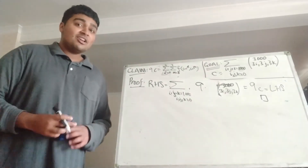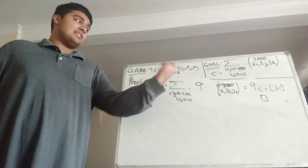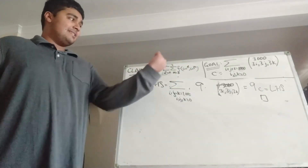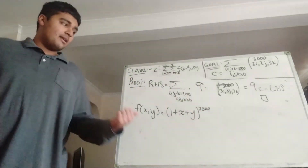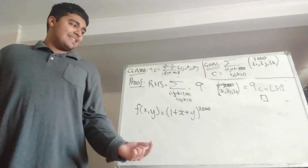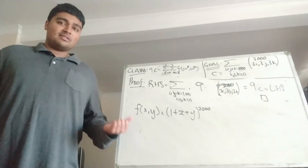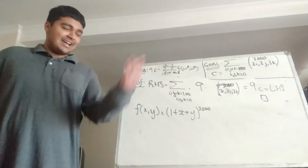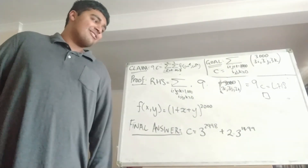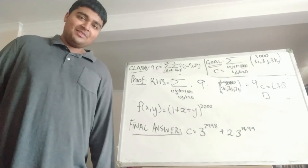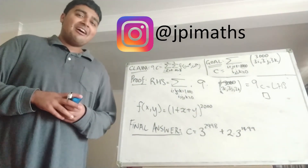So we've proved our claim in quite a neat manner. To get c, we just compute the sum of 9 values by plugging ω^l and ω^m into f(x, y) = (1 + x + y)^3000. Using symmetry arguments, de Moivre's theorem, and properties of roots of unity, we can compute the solution without literally raising a number to the 3,000th power. Our final answer is c equals 3 to the power of 2998 plus 2 times 3 to the power of 1499. I hope you enjoyed this video — I've never seen combinatorics and complex numbers mixed together like this, so I thought it was a really cool problem. Thank you for watching, catch you in the next one, have a great day.